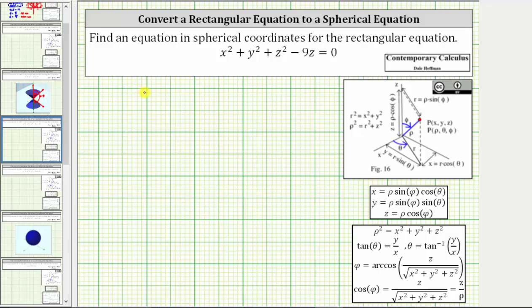So beginning with the given equation, again, we have x squared plus y squared plus z squared minus nine z equals zero.